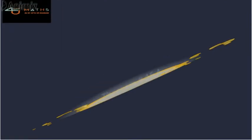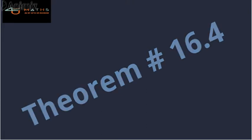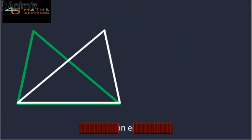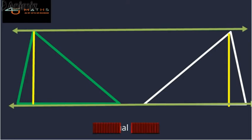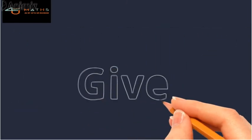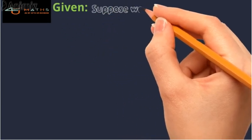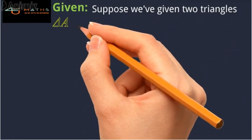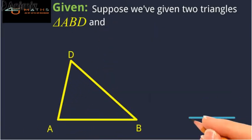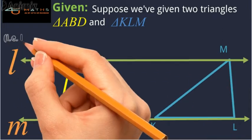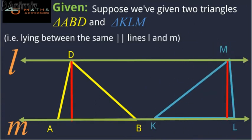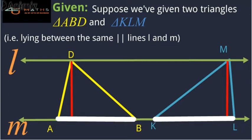Theorem 16.4. Statement of the theorem: Triangles on equal bases and of the same altitude are equal in area. Given: Suppose we have two triangles, triangle ABD and triangle KLM, both lying between the same parallel lines L and M. Also, it is given that the bases of both triangles have the same length, that is AB is congruent to KL.